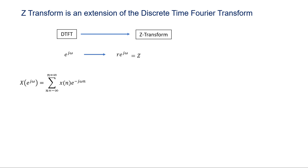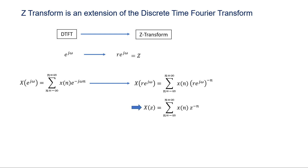So the definition for the discrete time Fourier transform is extended, with x(e^(jω)) expressed as a summation of x(n)·(r·e^(jω))^(−n). Substituting r·e^(jω) as z, this expression simplifies to the Z-transform definition: X(z) equals the summation from n equals minus infinity to plus infinity of x(n)·z^(−n).